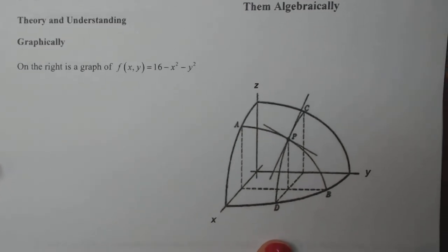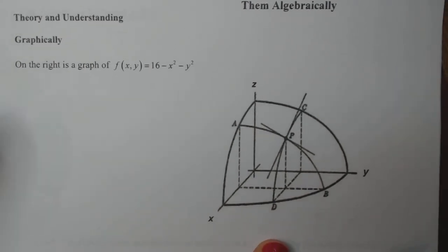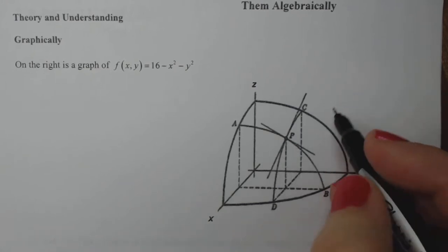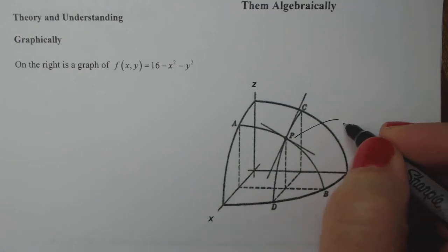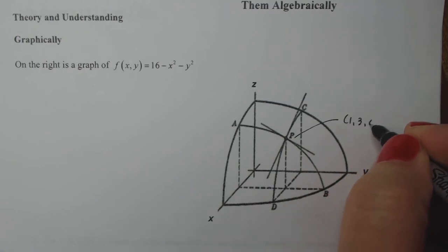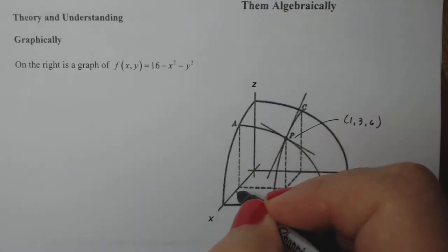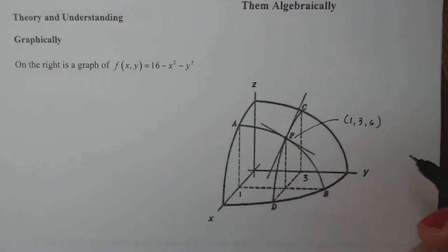Let's take a look at what the partial derivatives mean when you have a 3D surface. You can see this point P here, and we're actually going to say that point P is (1, 3, 6). So this will be one here and this will be three here. That's not quite to scale, but it does what we need to for the purpose of the problem.